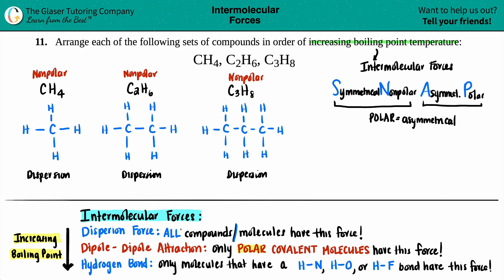The last intermolecular force is the hydrogen bond, the most specific of them all, because you need a hydrogen bound to nitrogen, oxygen, or fluorine — the most electronegative elements. But all the hydrogens here are bound to carbons. There are no nitrogens, no oxygens, and no fluorines, so they don't have hydrogen bonding either.